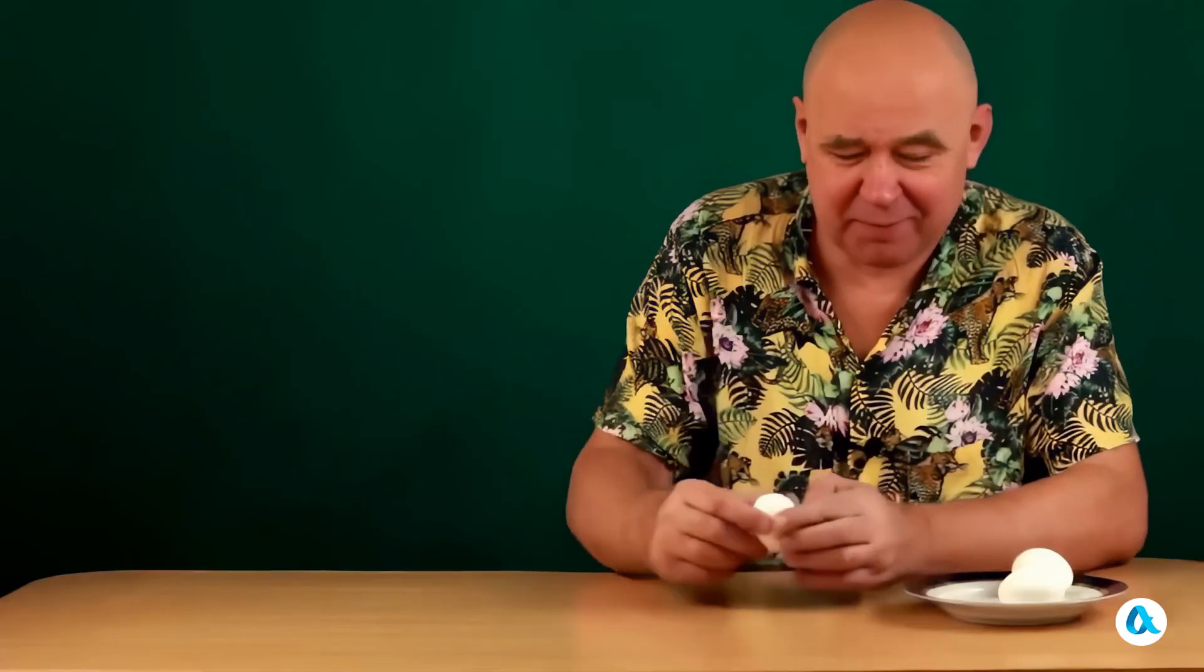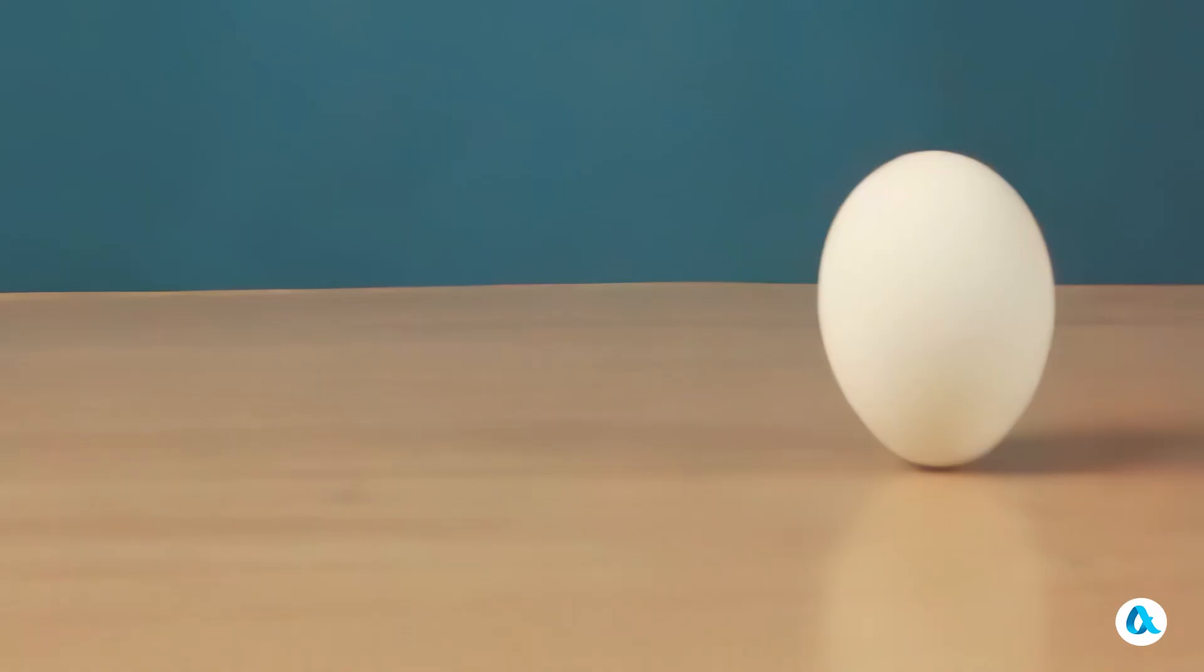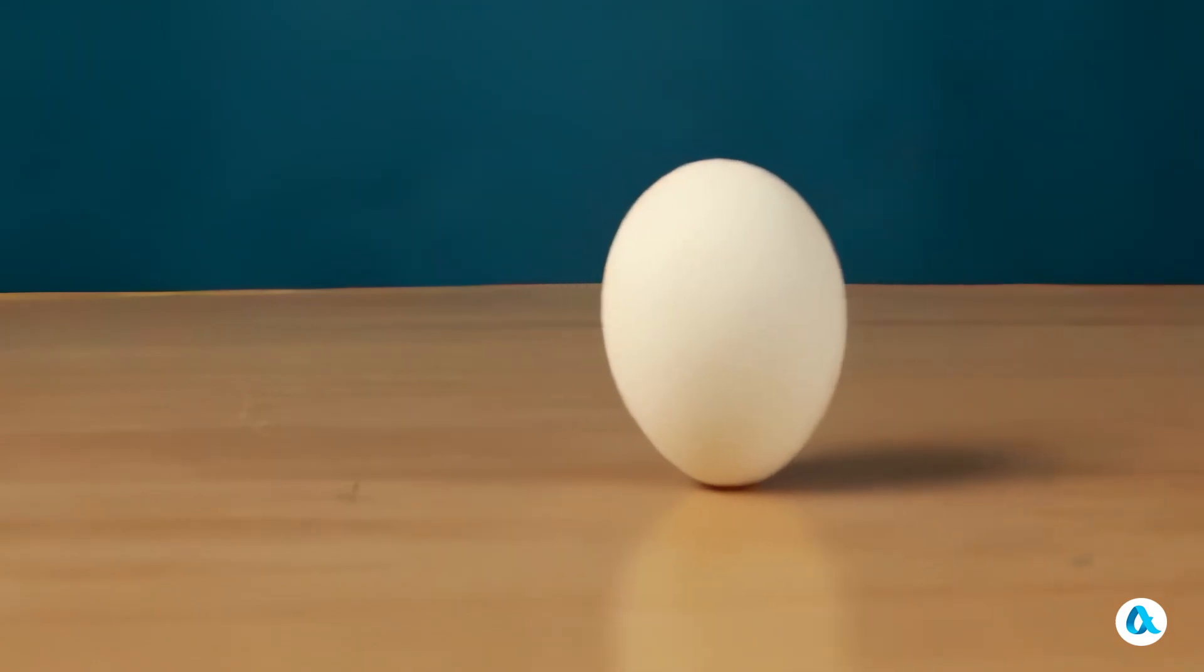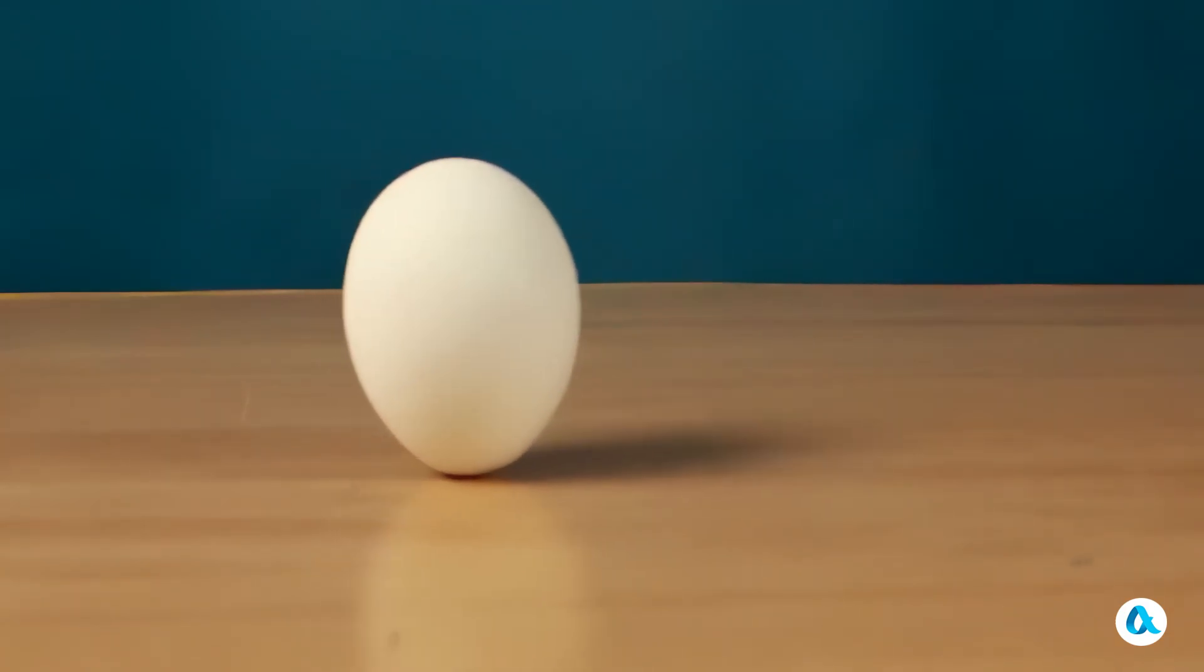In principle, sometimes, though rarely, the egg stands up on its pointed end instead of the blunt one. But honestly, you have to wait quite a while for that to happen. However, if you spin it on its pointed end, it stands just as well as it does on the blunt end. So this stable position of the spinning egg is also possible.